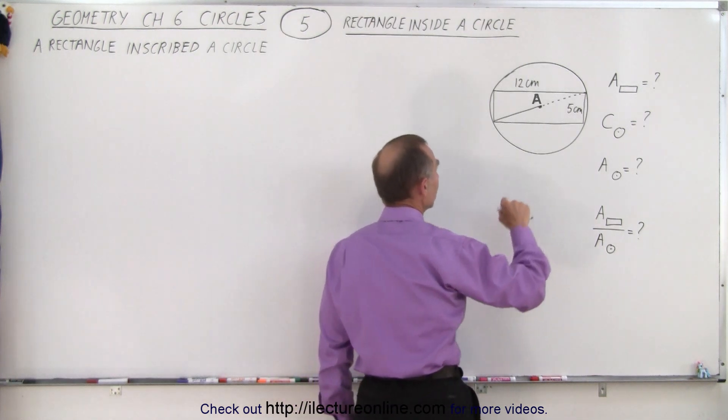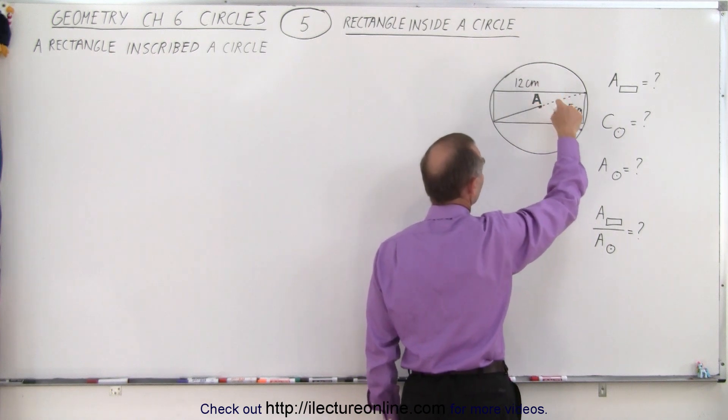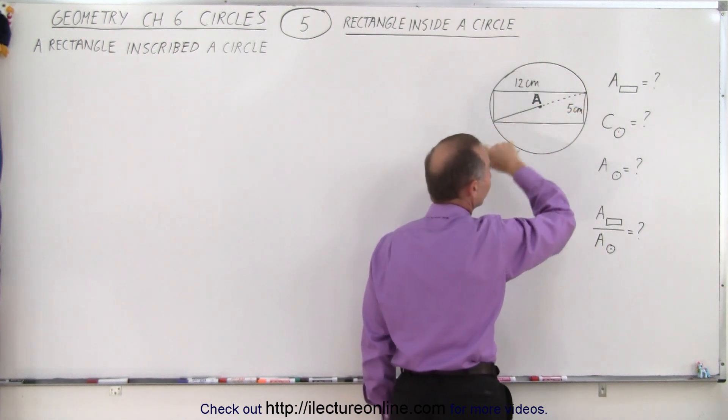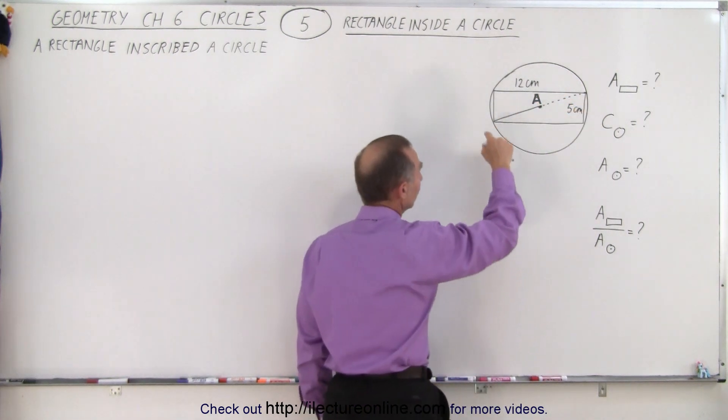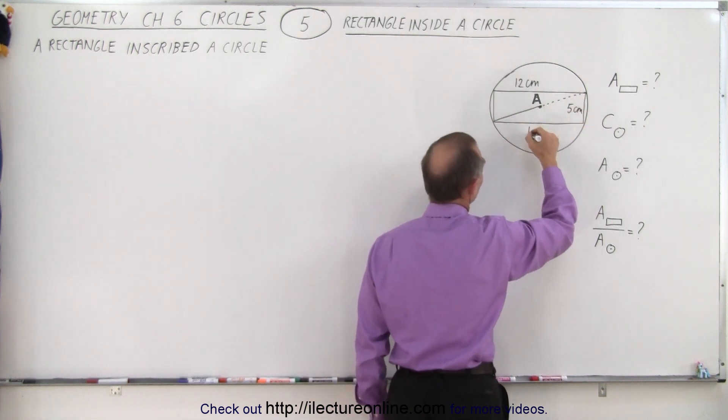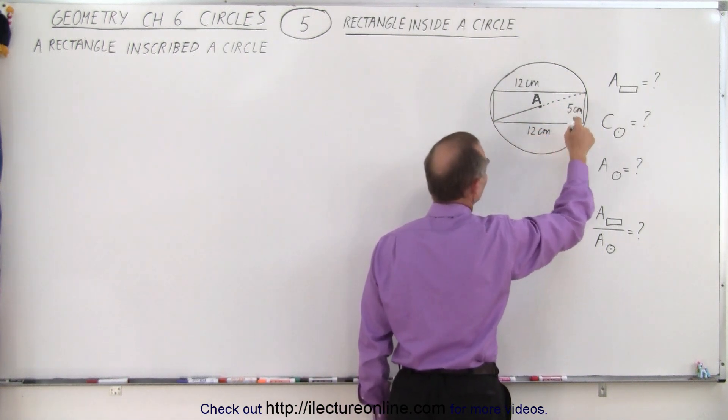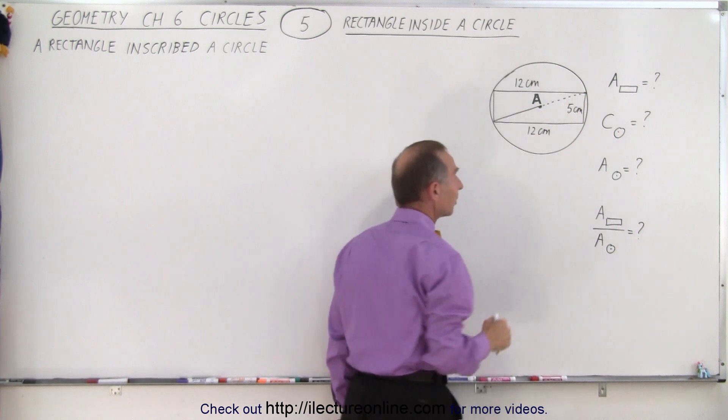Since we're given the size of the rectangle, it's 12 centimeters long and 5 centimeters wide, we should be able to find that distance because notice here we have a triangle. This side of course is also 12 centimeters, so these are the two sides and that's a hypotenuse.